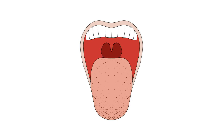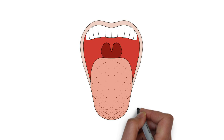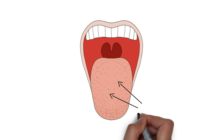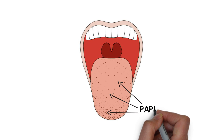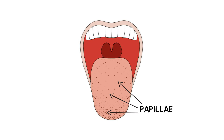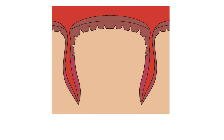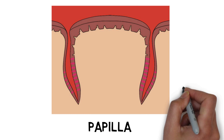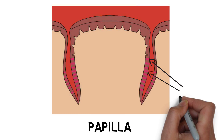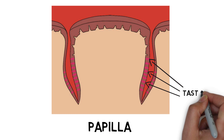The tongue is covered with many little bumps, which are sometimes mistakenly called taste buds. These small lumps of tissue, however, are known as papillae. Taste buds are found in the walls of papillae and the grooves surrounding them.